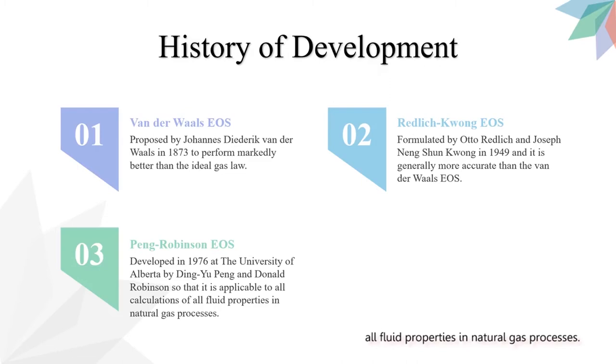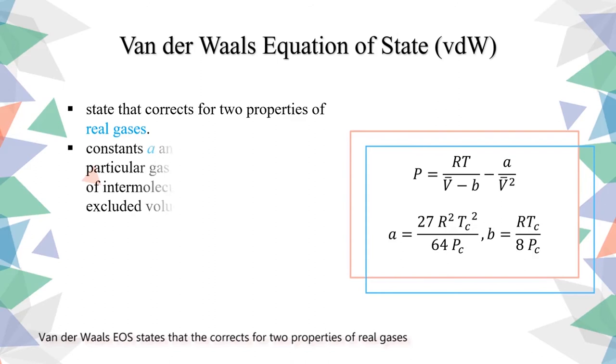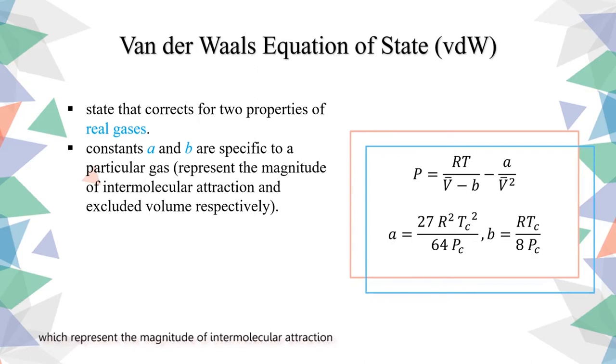Van der Waals' equation of state corrects for two properties of real gases. Constants a and b are specific to a particular gas and represent the magnitude of intermolecular attraction and excluded volume, respectively.